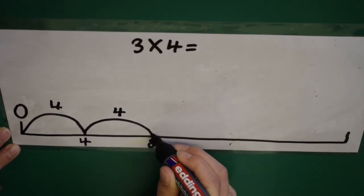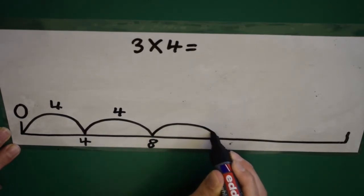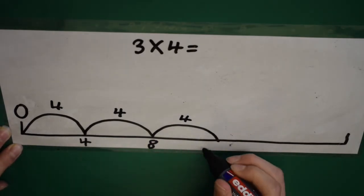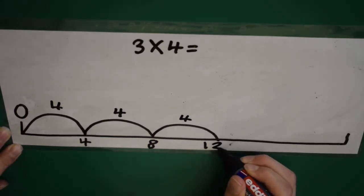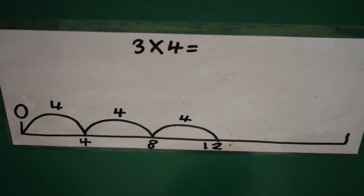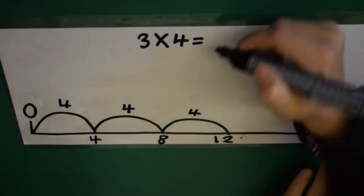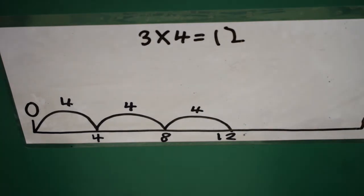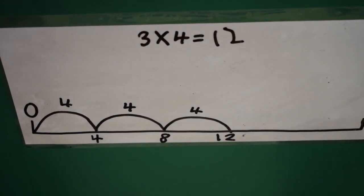Now, we're going to add on another four, which is? Twelve. Well done. Can you write our answer up here? So, three times four equals twelve. Bear with us. Thank you.